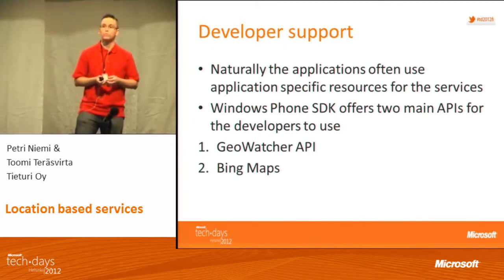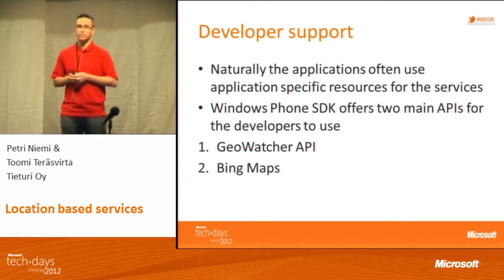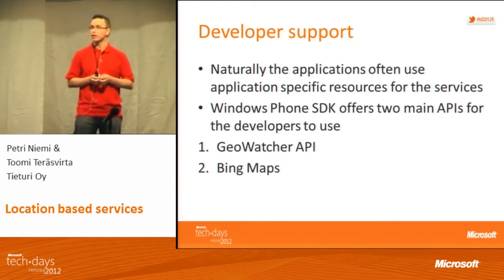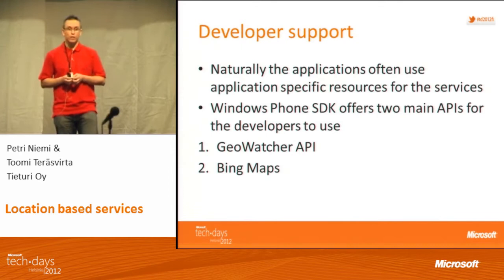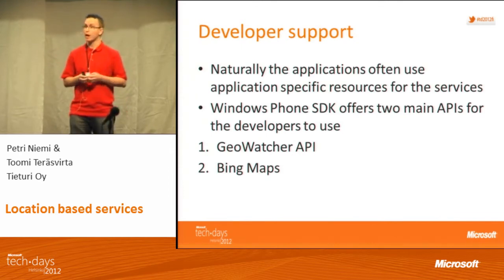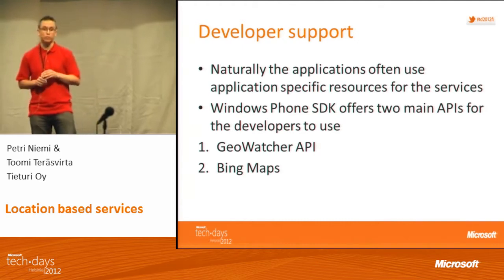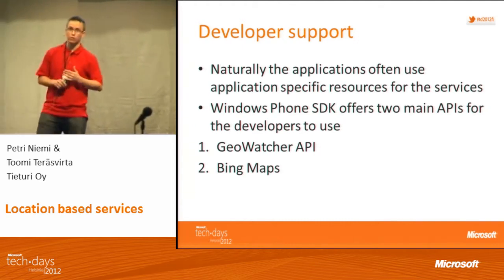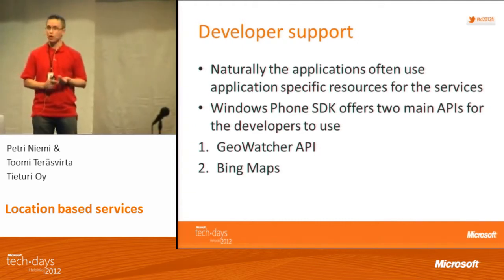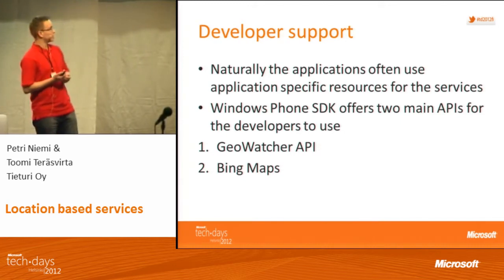And then, of course, you want to show the user where he or she is — some kind of mapping service. The raw data, 60 degrees this way, 24 degrees that way, doesn't really tell you anything. Put the user on the map, and for that you have several services. Bing Maps is the natural choice on a Windows Phone — very, very easy to use. Tommi actually has a demo application showing some code: how to get the position, how to put it on the map.